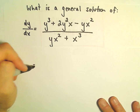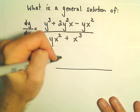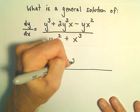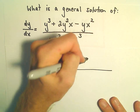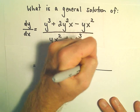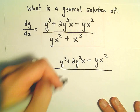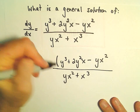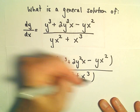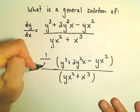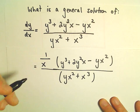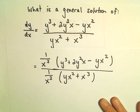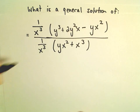So the first thing we're going to do here is divide. We've got y³ + 2y²x - yx² over yx² + x³. We're going to multiply by 1/x³, since the degree is three, and now we'll simplify.